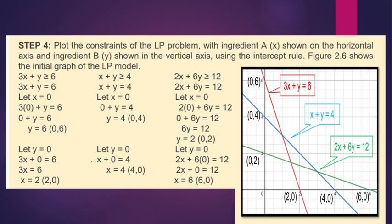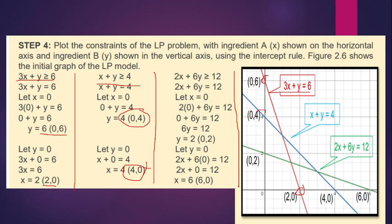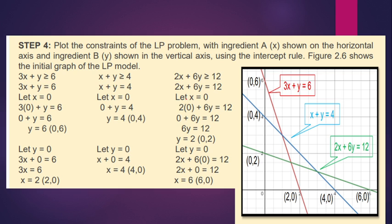Let's graph. This is the graphing of the first, second, and third equations or structural constraints. Using the intercept method: 3x + y, the resulting points are (0,6) and (2,0). Next, x + y ≥ 4 gives (0,4) and (4,0). Then 2x + 6y ≥ 12 gives (0,2) and (6,0). After graphing all three structural constraints, these are the corner points of the minimization.